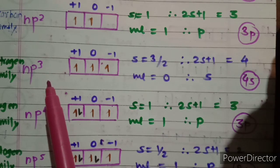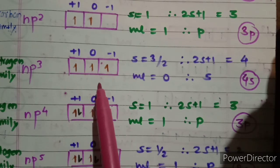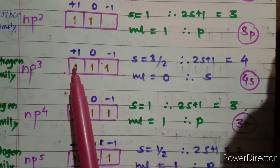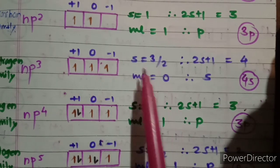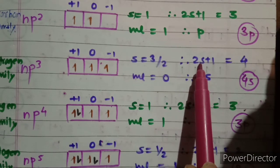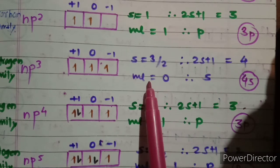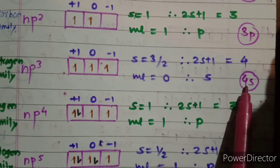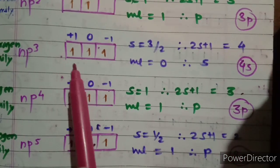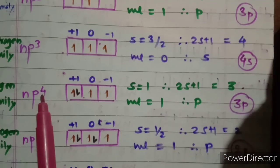For the nitrogen family, np3, three electrons are arranged according to Hund's rule: ml values +1, 0, −1. These cancel so ml = 0, and S = ½+½+½ = 3/2. Therefore 2S+1 = 4, and since ml = 0 the term is S. The term symbol is ⁴S, so all nitrogen-family elements have the ⁴S term symbol.